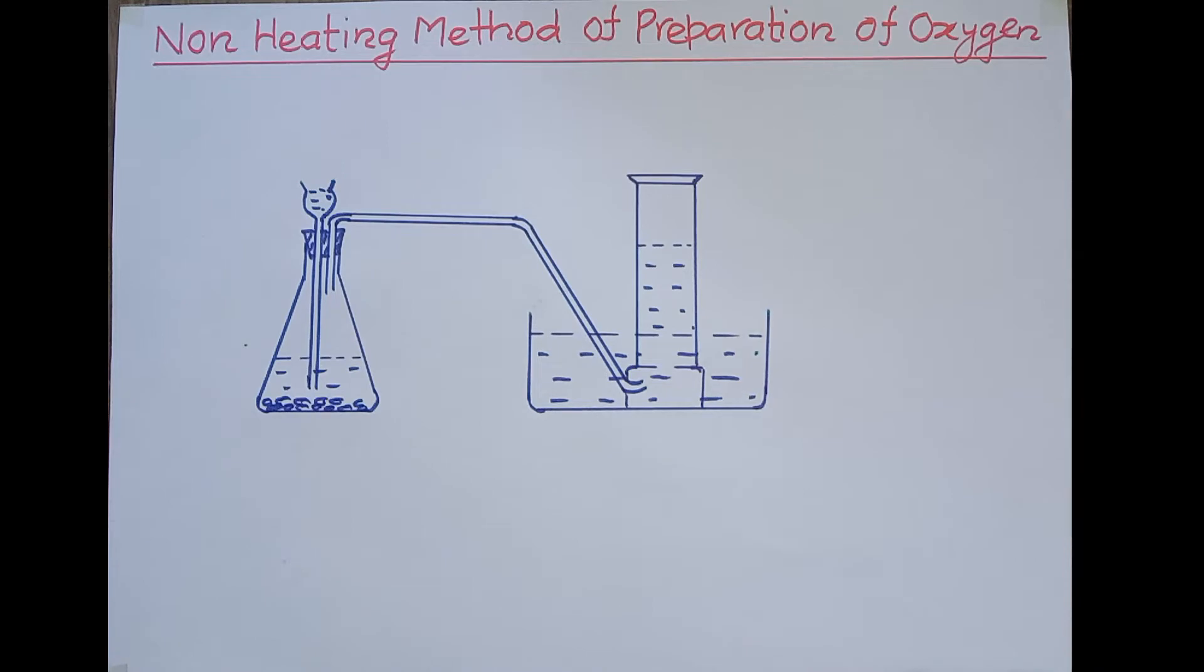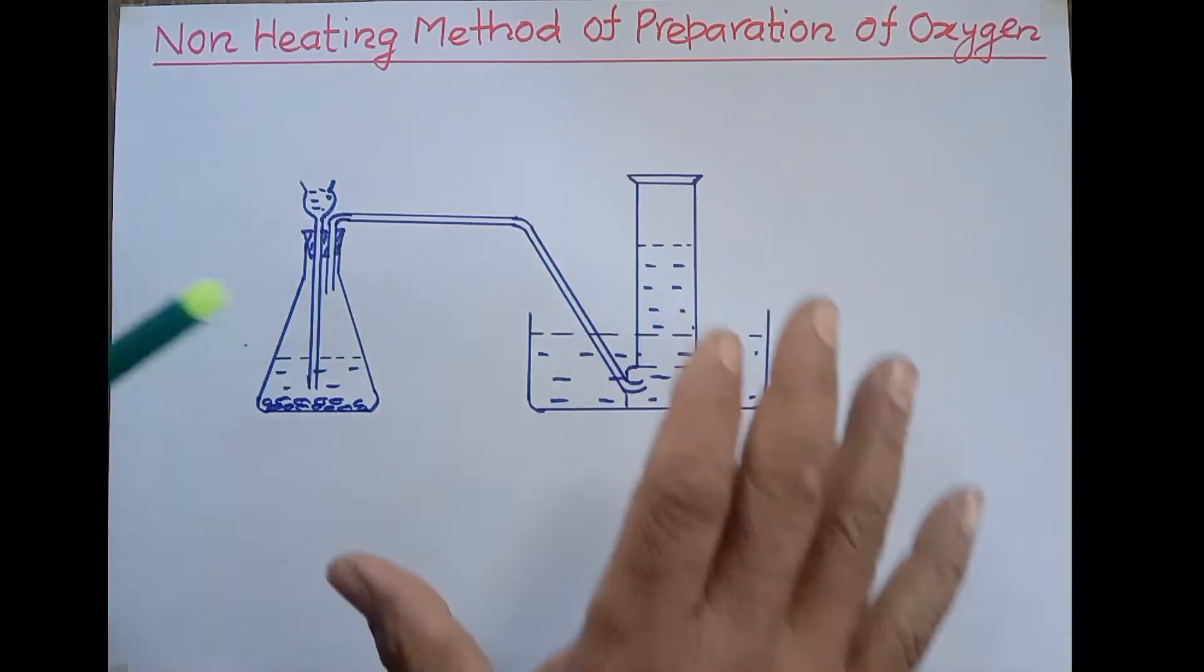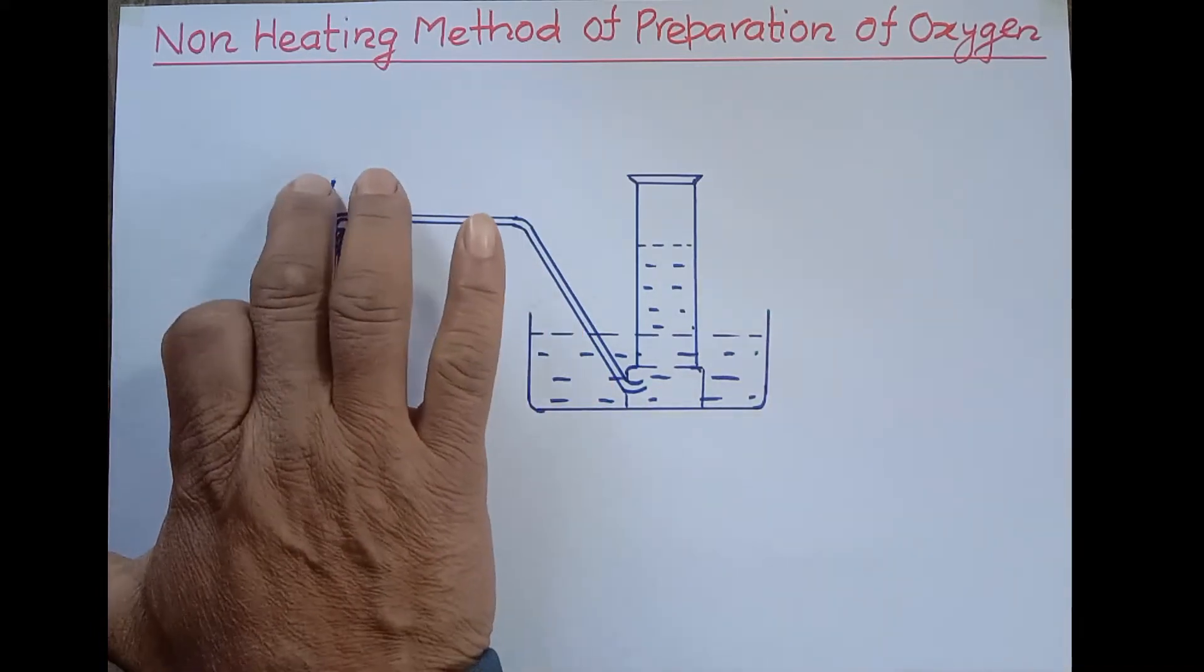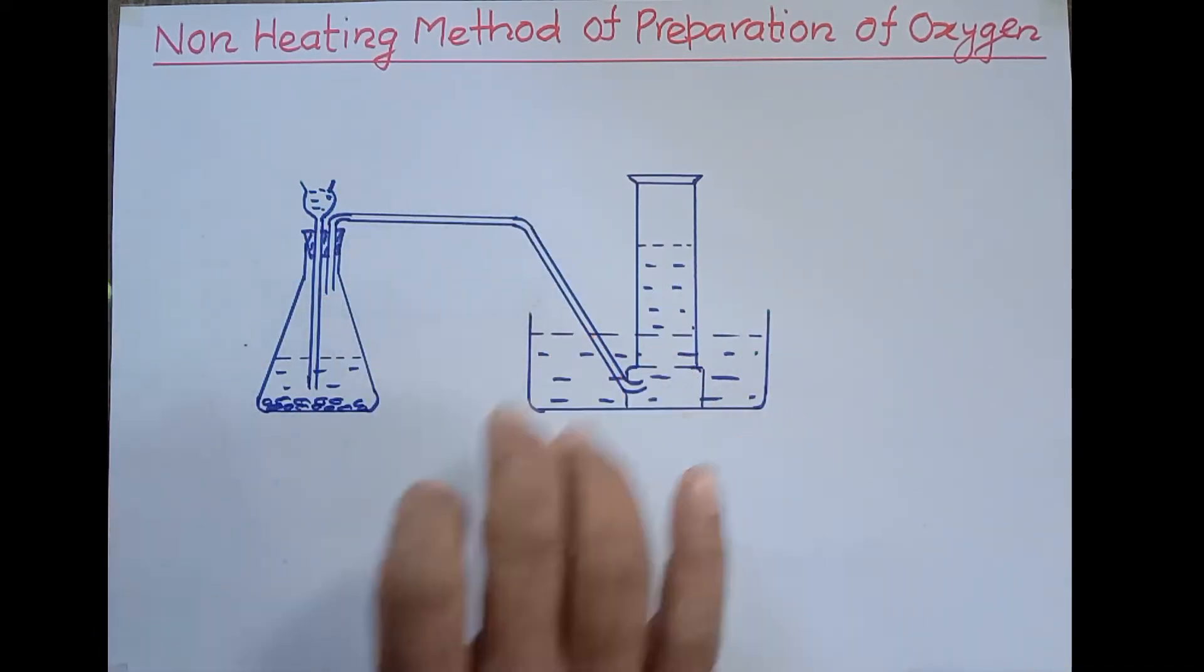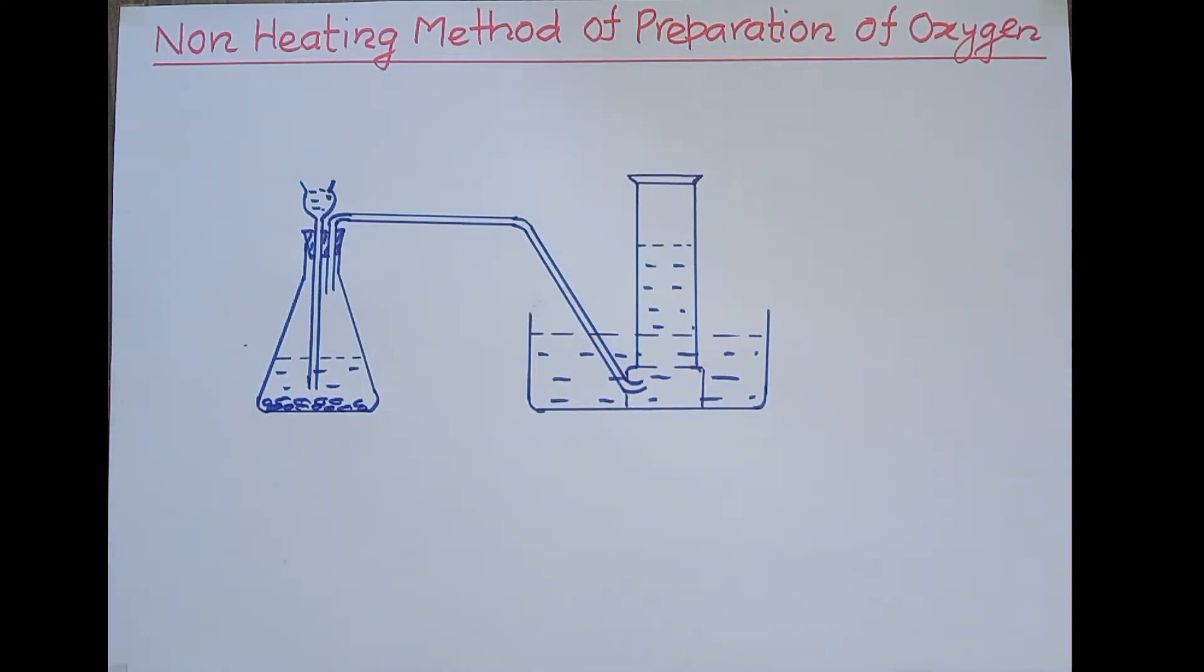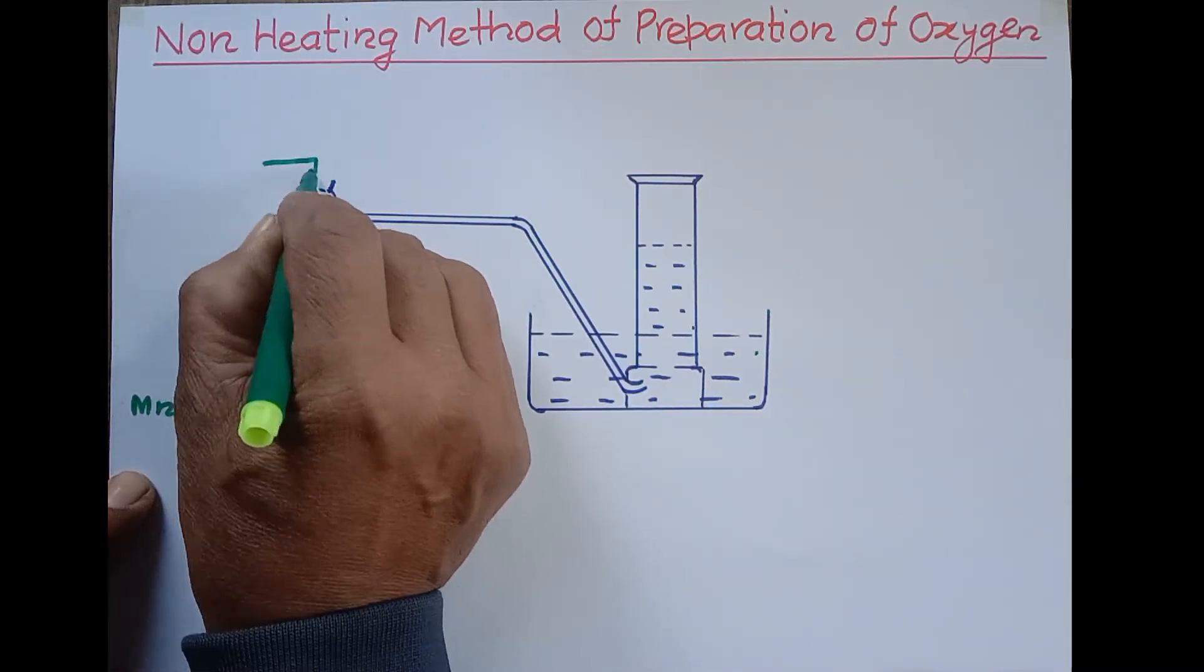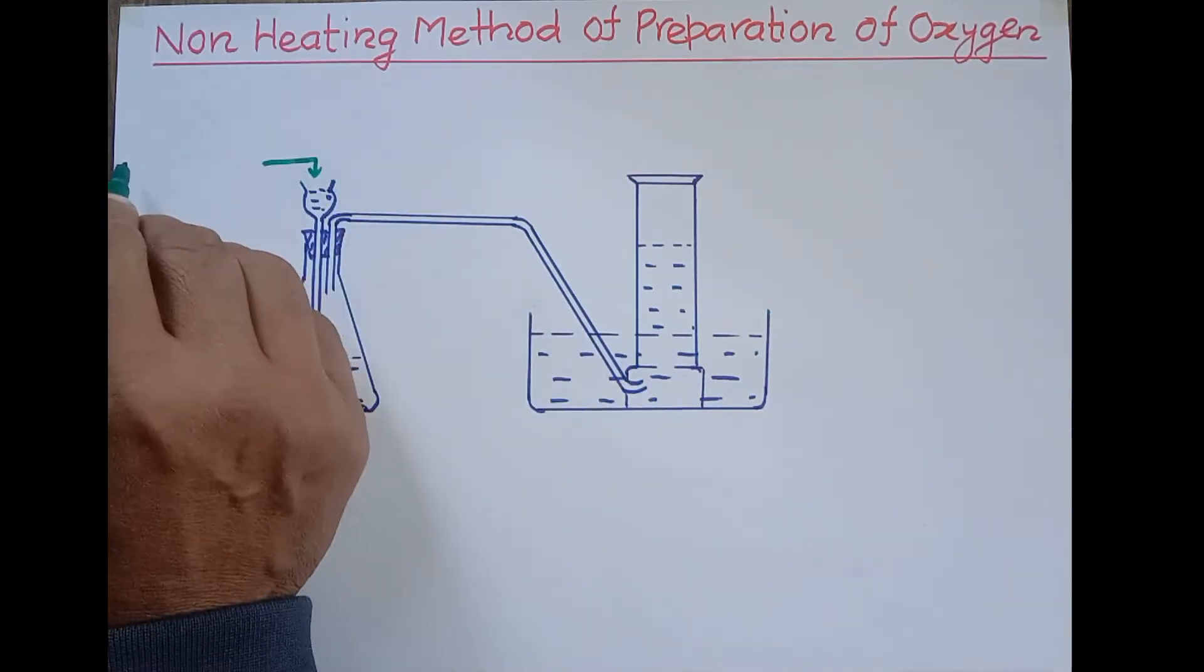A diagram is never completed without labeling, so we have to label the arrangement. This conical flask is fitted with a thistle funnel and delivery tube, and here we have taken a catalyst called manganese dioxide, MnO2. This is a catalyst.